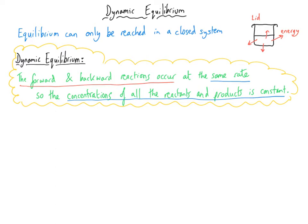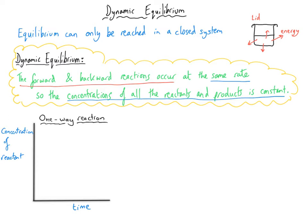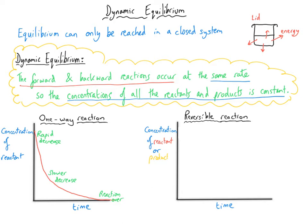The 'dynamic' part means both the forwards and backwards reactions are happening. The 'equilibrium' part means the concentrations of all reactants and products are constant — you might not have the same amounts of each, but those amounts don't change. On a graph of a one-direction reaction, the concentration of reactants decreases quickly at first, then slows and stops when reactants are used up. In a reversible reaction, the concentration decreases more slowly and levels out — but not at zero.